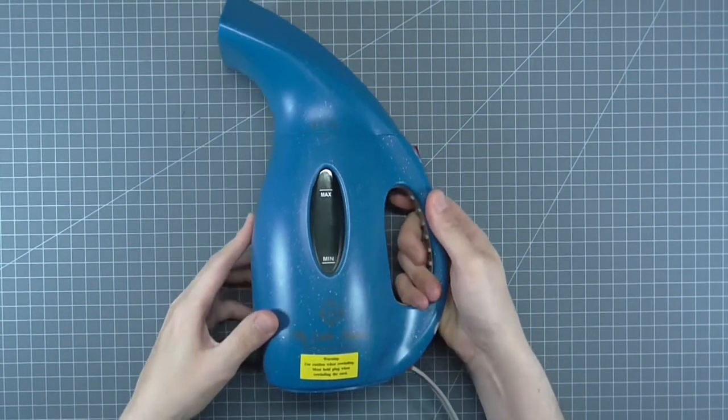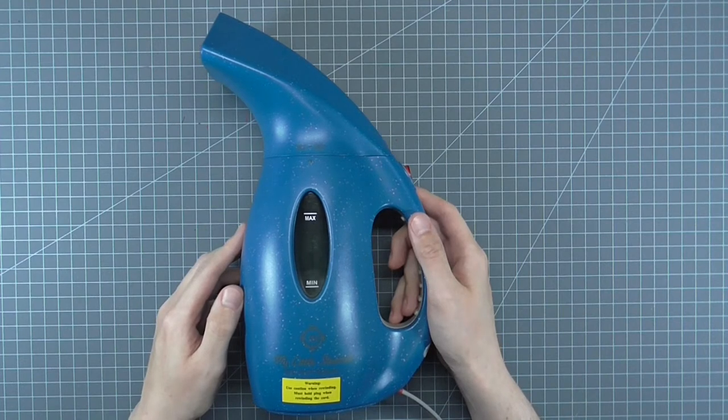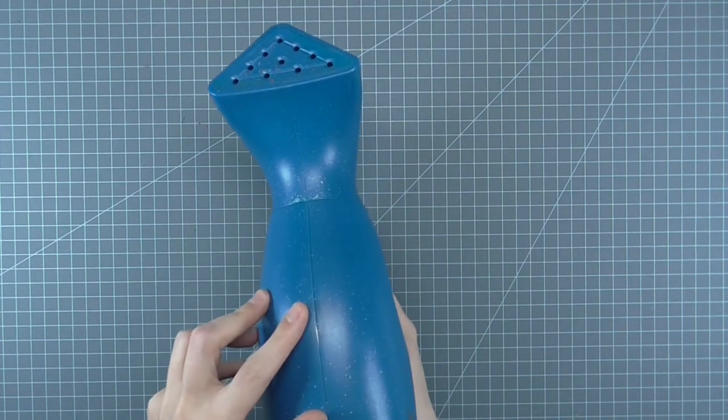You'll need a towel to catch any drips. You'll need something that produces a constant stream of steam. This is a simple garment steamer from a home goods store. It does not have to be expensive.